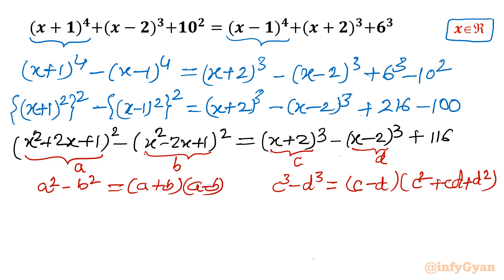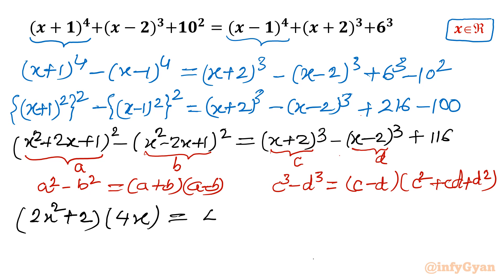For the LHS, writing (a+b): adding (x²+2x+1) with (x²-2x+1), the 2x terms cancel, leaving 2x²+2. For (a-b), the x²+1 terms cancel, leaving 4x. For the RHS, (c-d) gives (x+2)-(x-2), which equals 4.